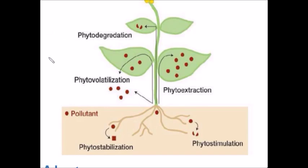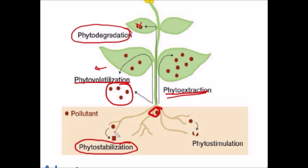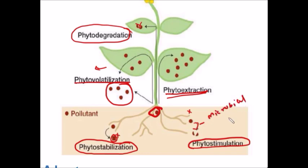From the image, you can understand the various methods of phytoremediation easily. If the pollutant is absorbed and stored in various parts of the plant, it is phytoextraction. If it is absorbed and released into the environment as gas, it is phytovolatilization. If absorbed and degraded in the leaves, it is phytodegradation. If the pollutant is not absorbed but stabilized so leaching does not occur, it is phytostabilization. If the pollutant is not absorbed but degraded in the soil by stimulating microbial activity, it is phytostimulation.